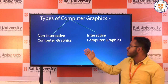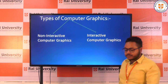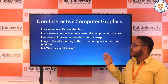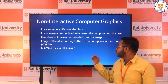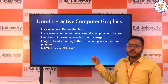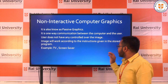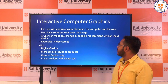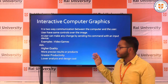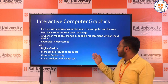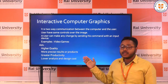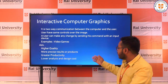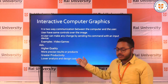Here are the two types of computer graphics. First is non-interactive and second is interactive. Non-interactive is also called passive graphic. It is a one-way communication between the computer and the user, and the user does not have any control over the images. The image works according to instructions given in the stored program, like a TV screen saver. The second type is interactive computer graphics, which is a two-way communication between the computer and the user. The user has some control over the images and can make changes by sending commands with an input device, like when playing games where you can modify anything.